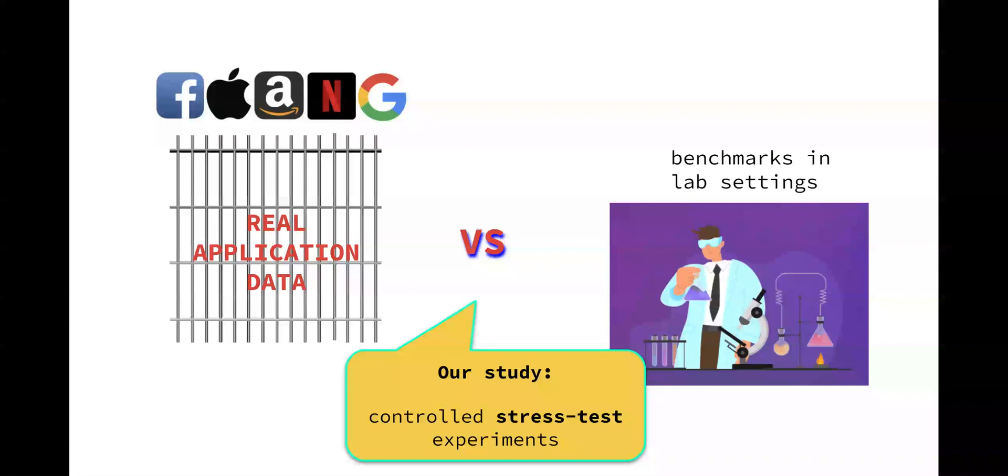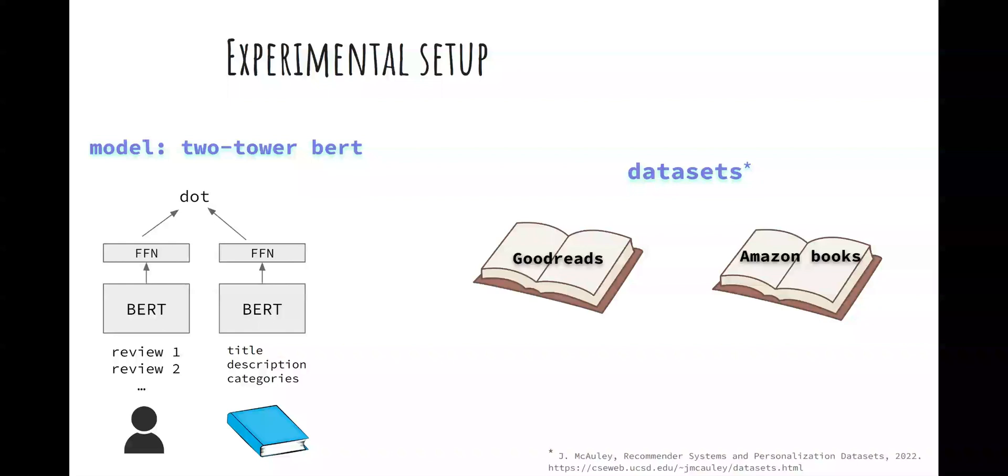We show that the reported high performance on benchmarks is often unrealistic. Our experiments are focused on text-based recommender systems which use as input user-generated reviews and item textual metadata.